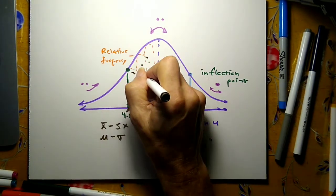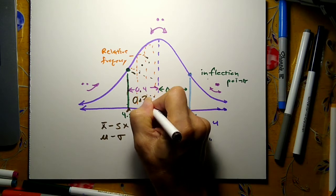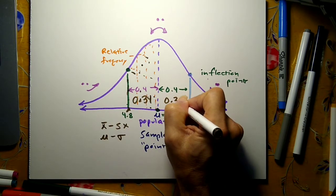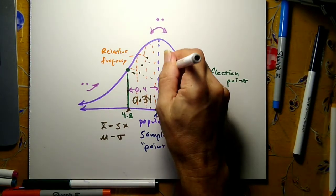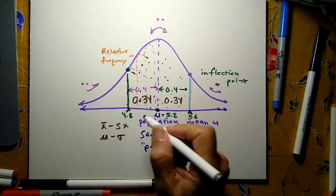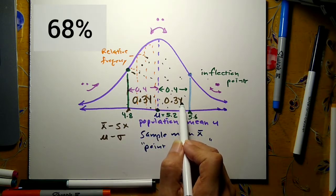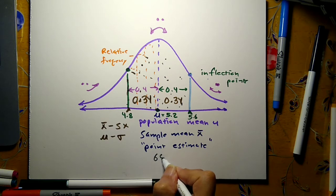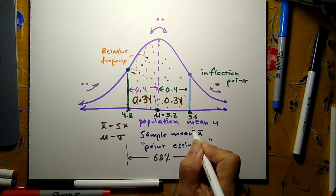This area right here is just 0.34. 34% of the data is in that area. Another 34% of the data is on this side, over here. 34% of the area is over here. Together, that means that 68% of the data is between here and here. We have 68% of the data should be between here and here, 0.68.